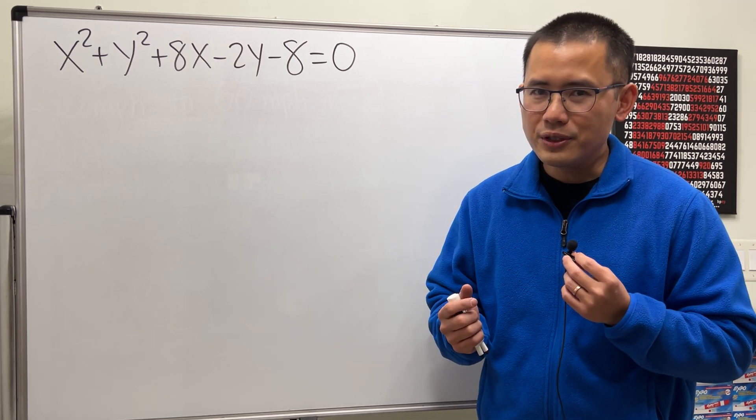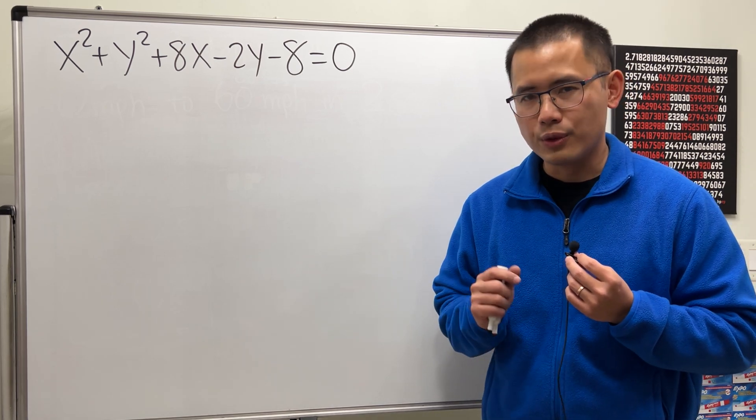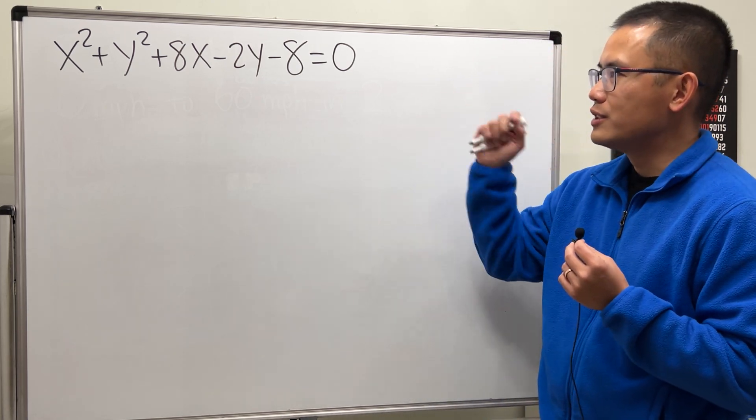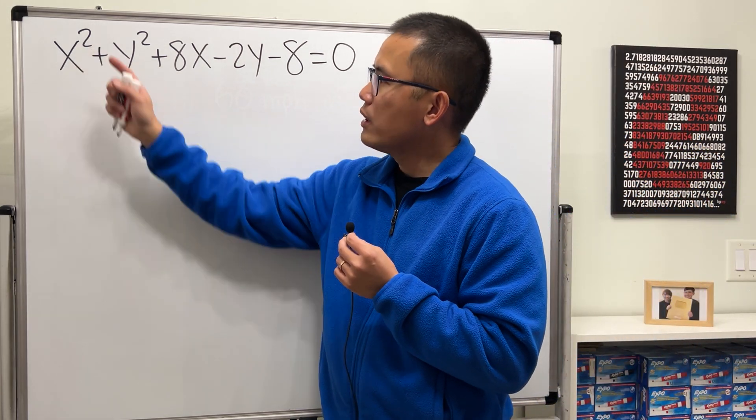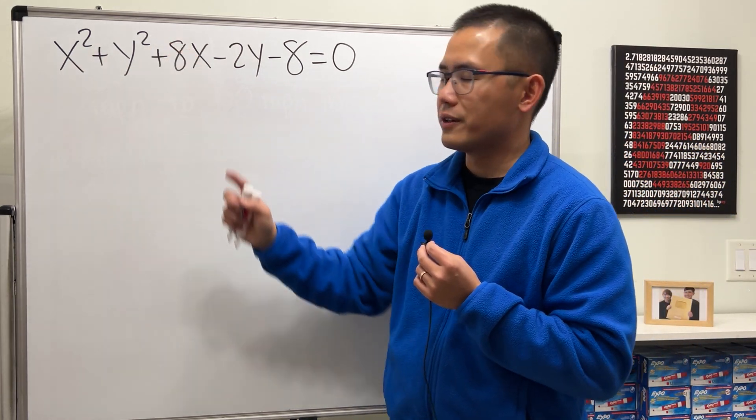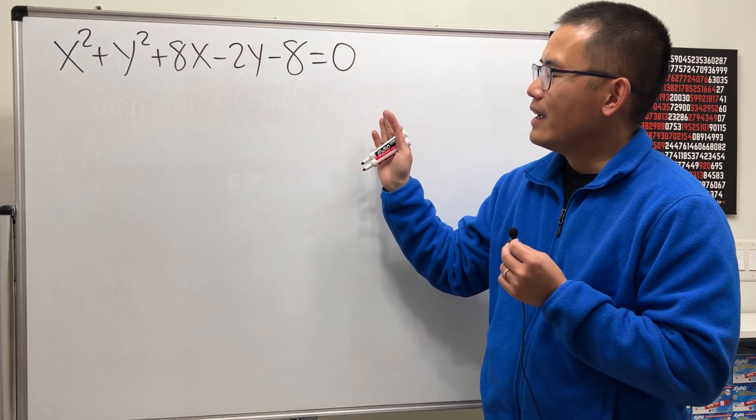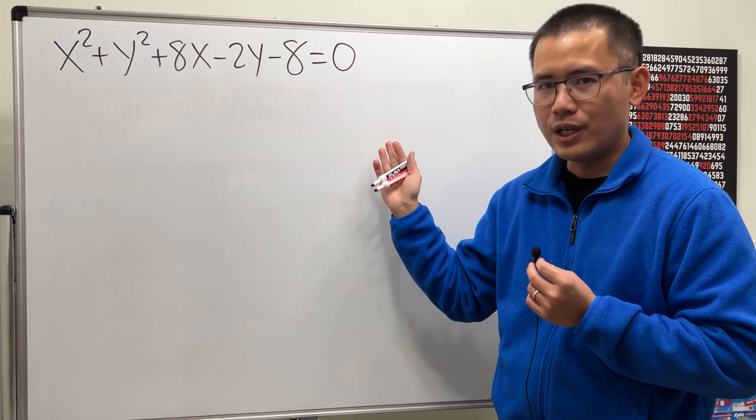But there are situations that you really have to know how to complete the square, such as this one right here. We have a second degree equation, meaning we have x squared, and here we also have y squared. We would like to investigate what this is.